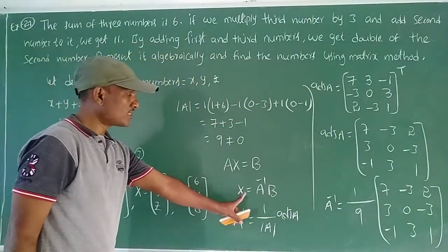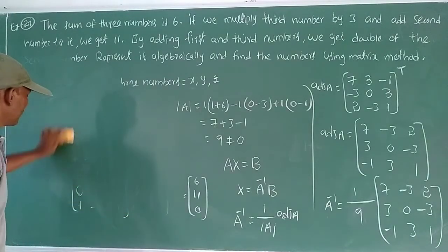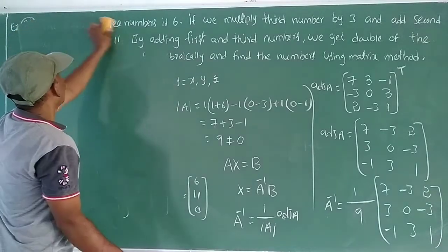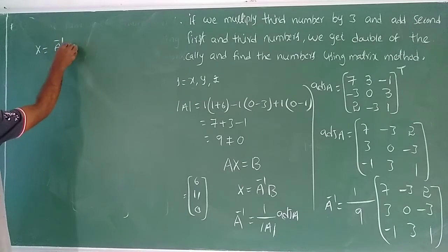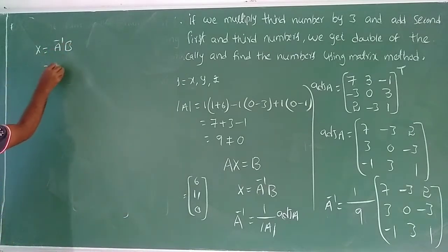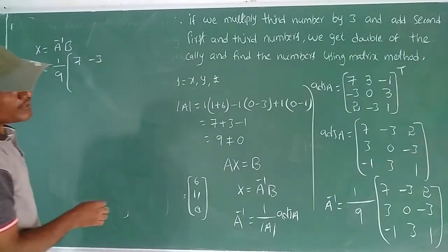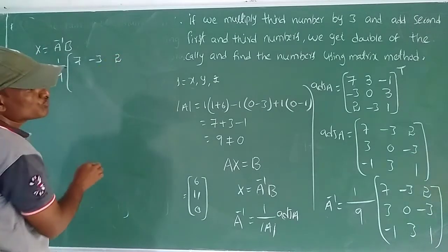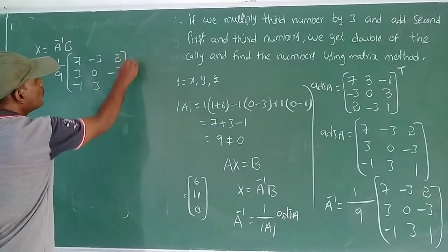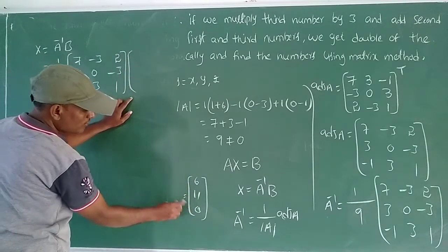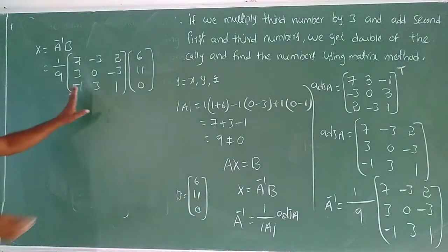Next, capital X equal to A inverse into B. A inverse is (1/9) times [7, −3, 2; 3, 0, −3; −1, 3, 1] into B matrix [6, 11, 0].